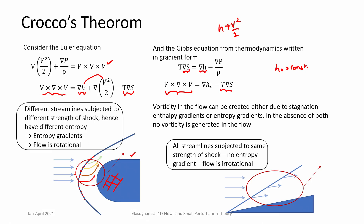If you consider a planar shock such as from a wedge, an oblique shock turns all streamlines by the same angle. Streamlines were parallel before and remain parallel after the shock, just deflected by a certain angle. There is an entropy jump across the shock, but after the shock there is no entropy gradient — before the shock constant entropy, after the shock another constant entropy. So such flows are irrotational. Crocco's theorem connects vorticity with entropy gradients, and is very important for determining which approach to use in solving flow field problems.